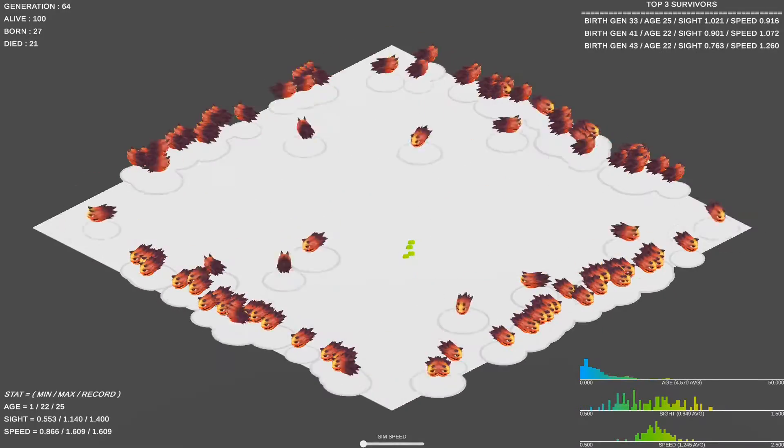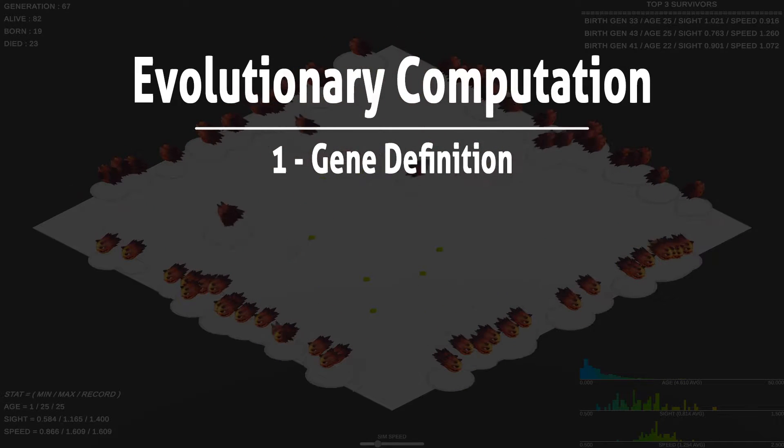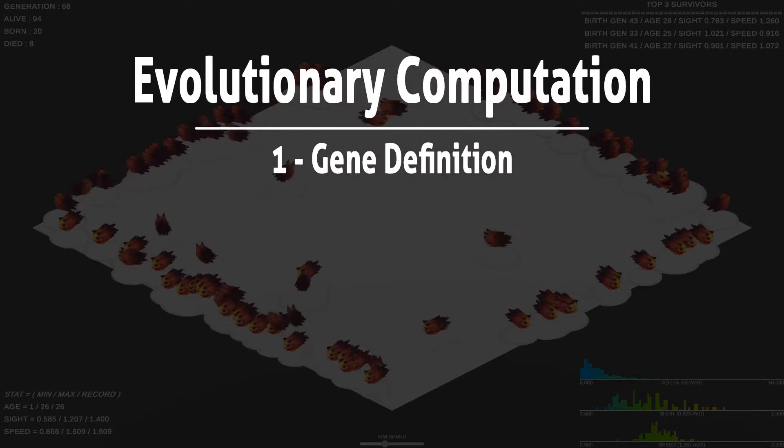Evolutionary computation can be broken down into these components. Gene Definition: this is where we define which genes or traits we will be simulating.